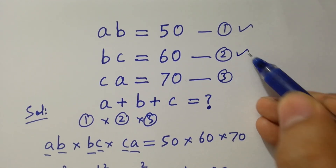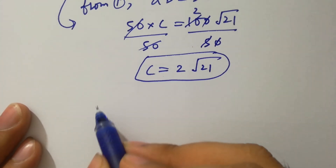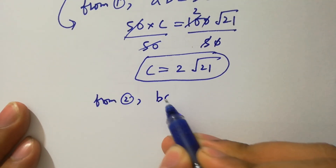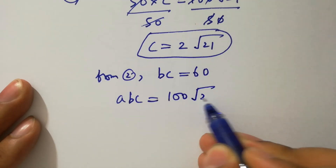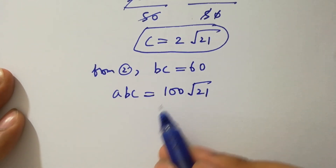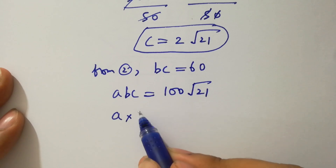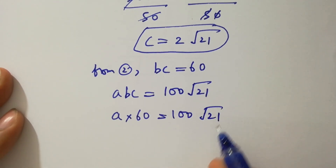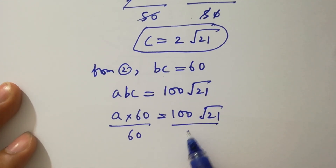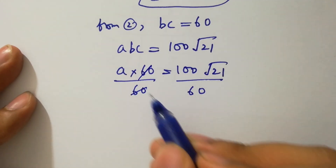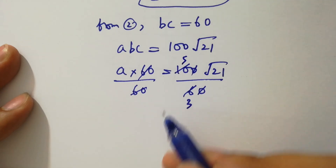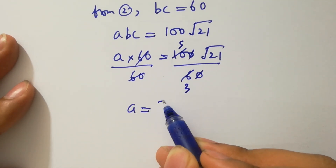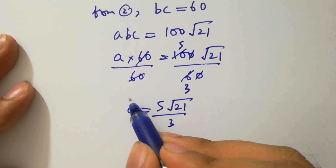From the second equation, bc equals 60. Since abc equals 100√21, we have a times 60 equals 100√21. To find a, divide both sides by 60. The 60s cancel, and simplifying gives a equals 5√21 over 3.